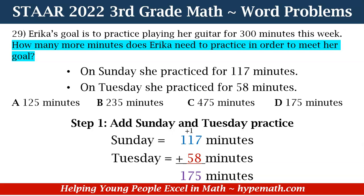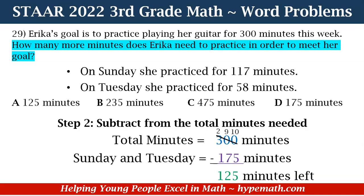Now I need to subtract 175 from 300 minutes to find out how many minutes Erica still needs to meet her goal. So: 300 minus 175. We mark through 300, putting a 2 in the hundreds place, a 9 in the tens place, and 10 in the ones place. 10 minus 5 equals 5. Moving to the tens place: 9 minus 7 equals 2. For the hundreds place: 2 minus 1 equals 1. So 125 minutes is what Erica has left in order to meet her goal.